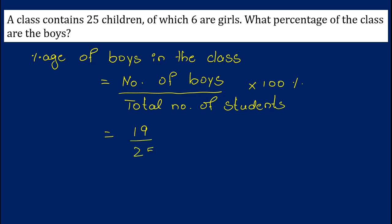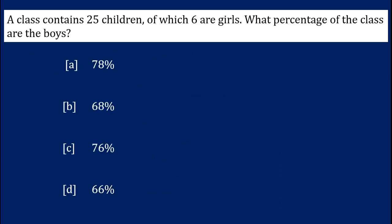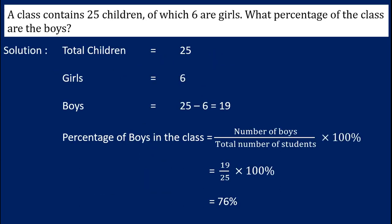Cancel the terms: 25 fours are 100, and 19 into 4 gives 76 percent. This is the answer — 76 percent. Option C is the correct answer for this question. In this way we have to solve the given problem.